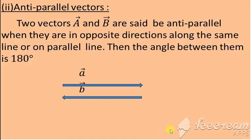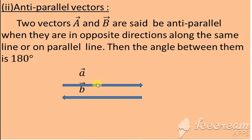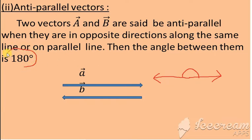The next one is anti-parallel vectors. In anti-parallel vectors, we have two vectors which are acting in different directions. If they are acting in different directions, you draw one vector and the second vector, so the angle made between them is 180°. The angle made is 180° — that is called anti-parallel vectors. The angle made is 0° — those are called parallel vectors.